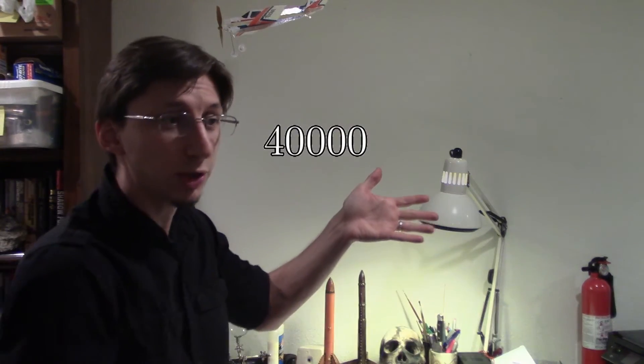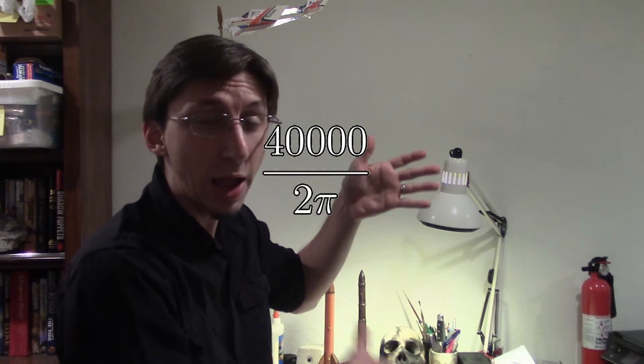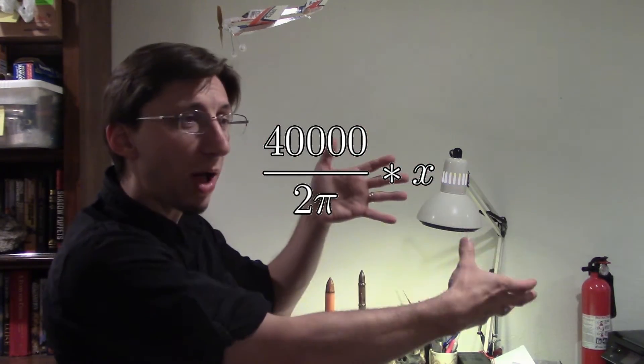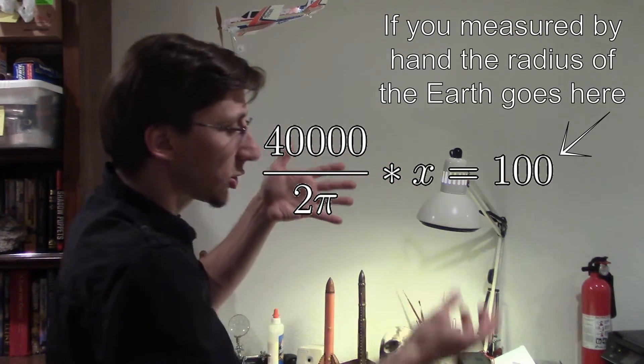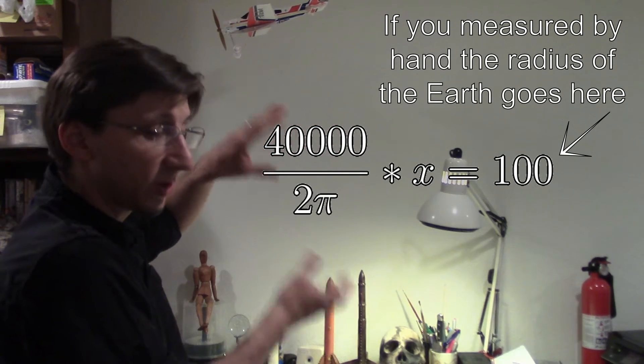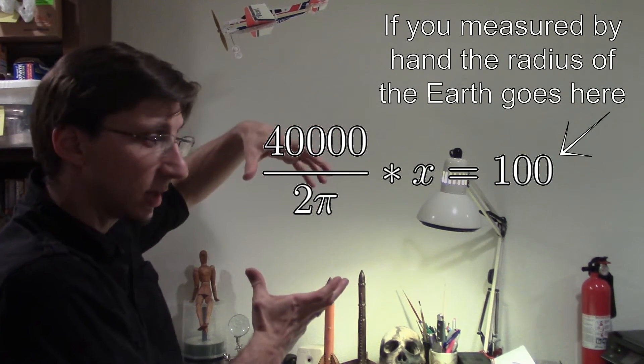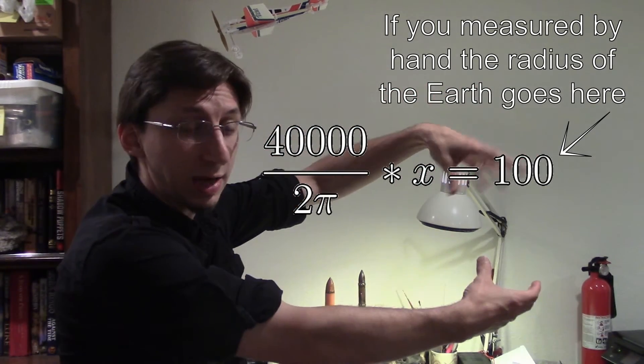Take 40,000, that's the rough circumference of the Earth, and divide it by 2π. Multiply it by something and set that all equal to 100. That's the 100 pixels. So what that means is the radius of the Earth, that's this circumference divided by 2π means the radius, times something is equal to the radius in pixels.